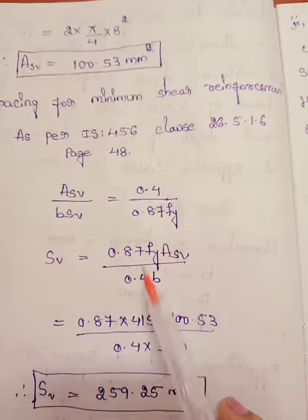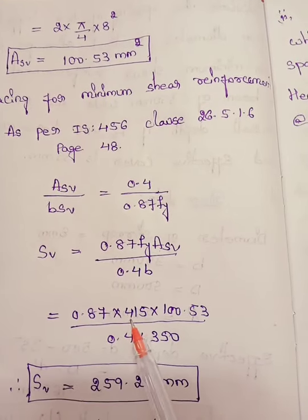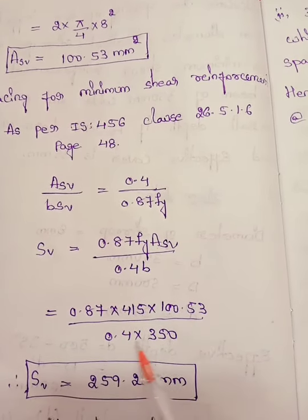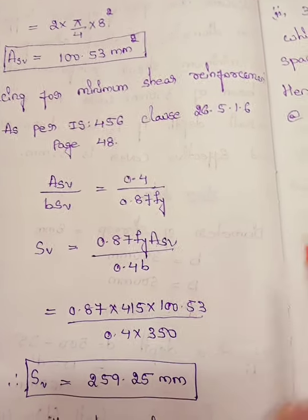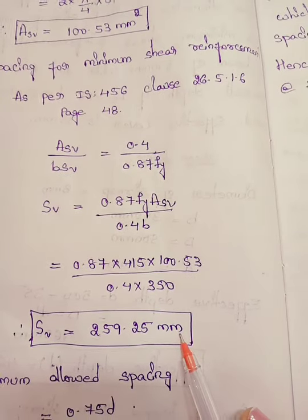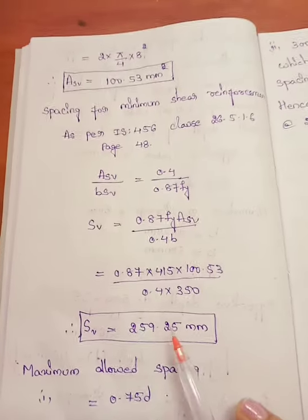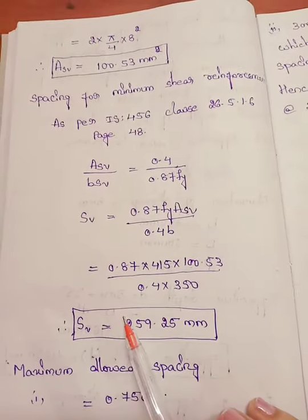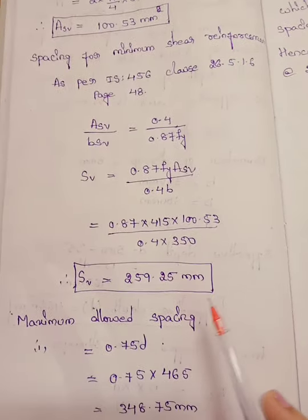Rearranging, sv = (0.87 × fy × Asv) / (0.4 × b) = (0.87 × 415 × 100.53) / (0.4 × 350). Therefore sv = 259.25 mm.